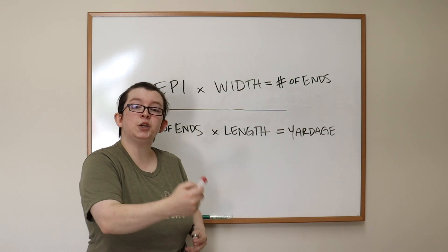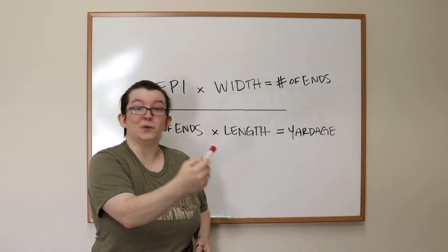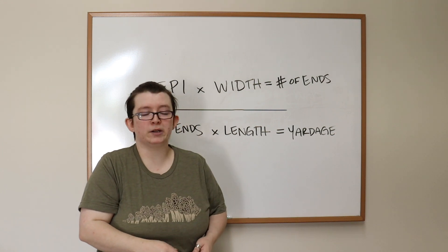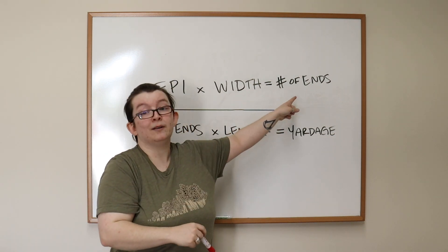So ends, like we talked about before, is each individual strand of yarn, each end of yarn, thread, whatever you want to call it, all the way across your project. So if you were to go through and count each individual one, that total number is going to be right here.